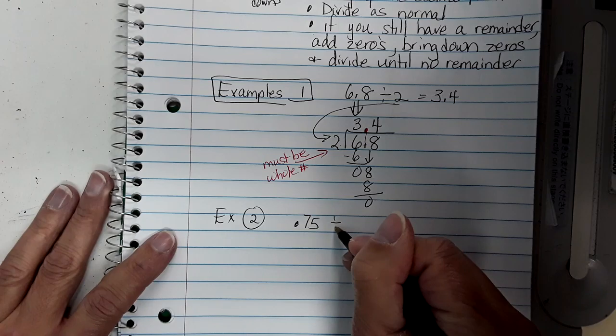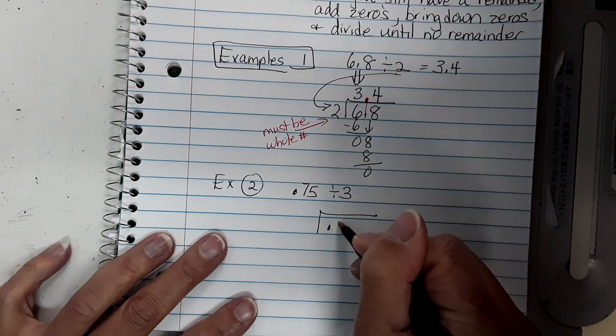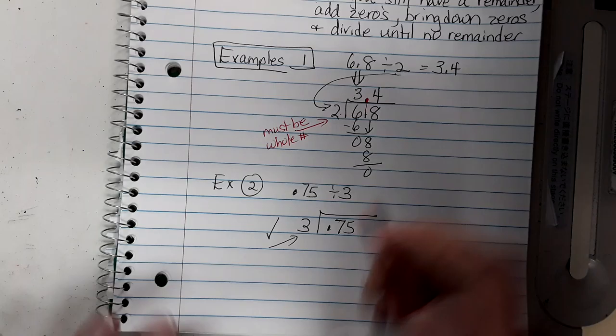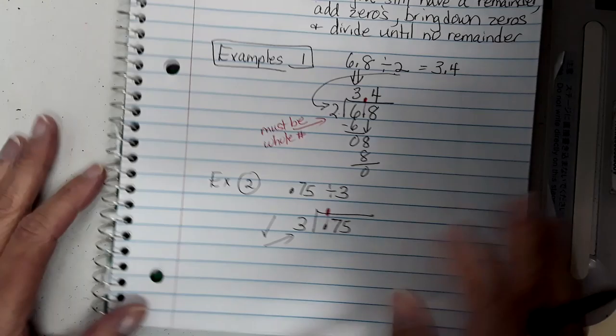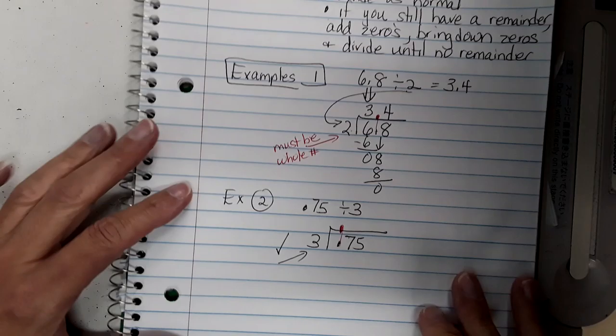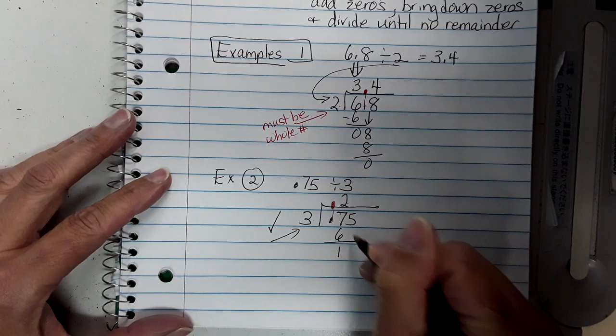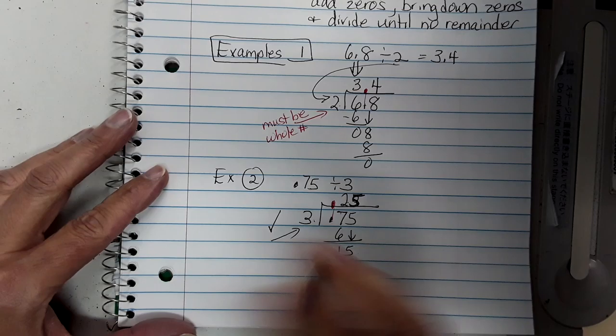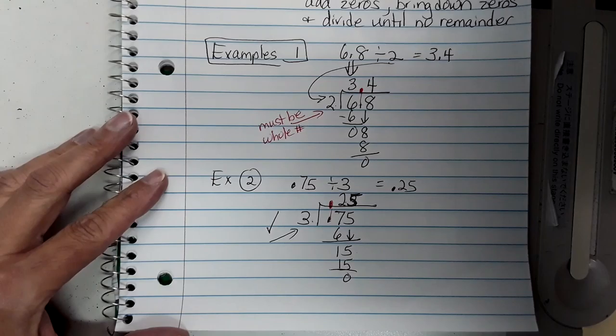Example two: seventy-five hundredths divided by three. Same process — the dividend goes under the house, the three outside. This is a whole number, so we're good to go. Bring up the decimal point. Two times three is six, subtract one, bring down the five. Three goes into fifteen exactly five times. Five times three is fifteen, zero remainder. So our answer is twenty-five hundredths.